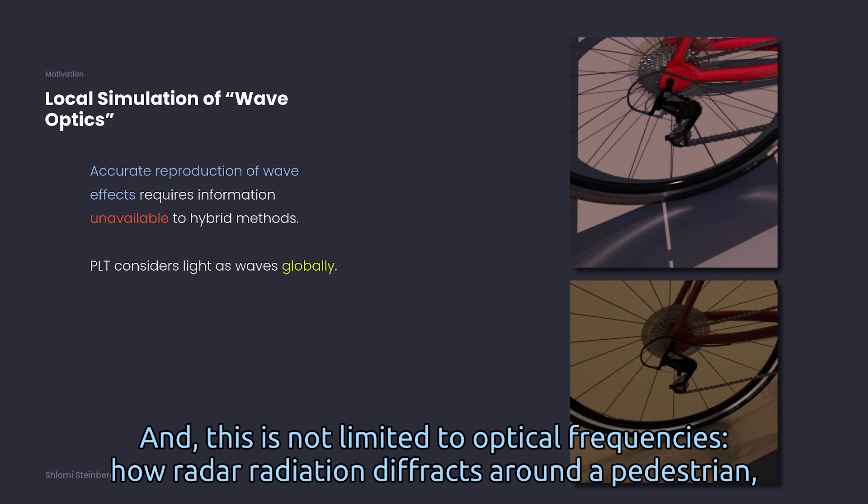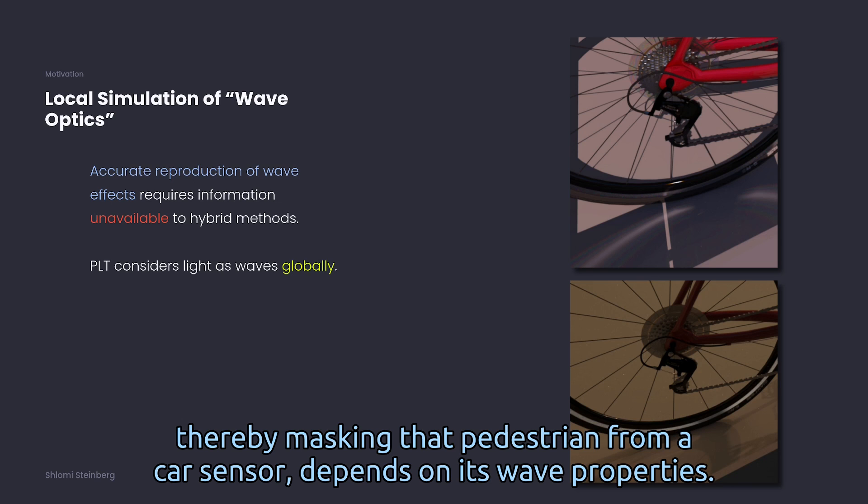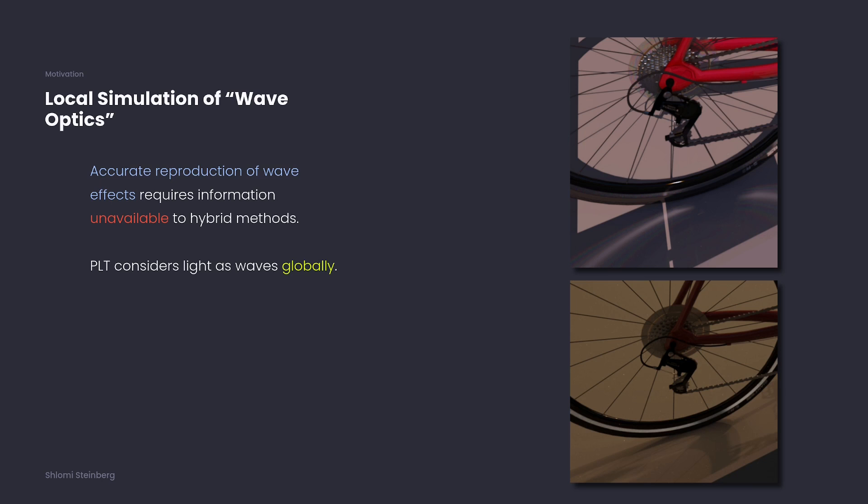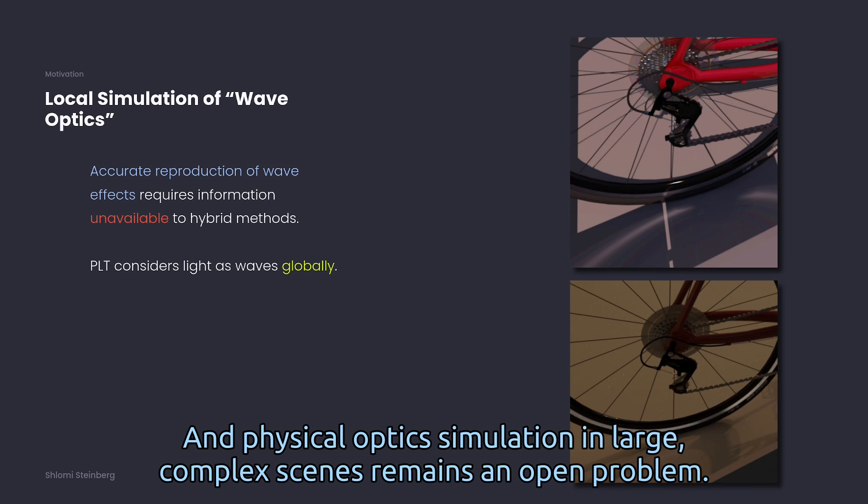And this is not limited to optical frequencies. How radio radiation diffracts around a pedestrian, thereby masking that pedestrian from a car sensor, depends on its wave properties.